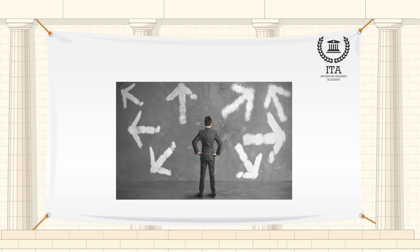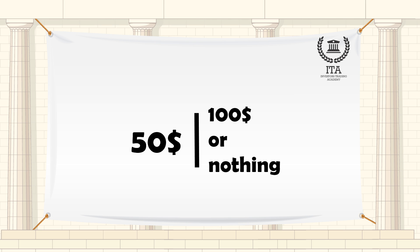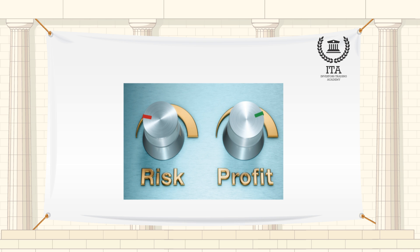A person is given the choice between two scenarios, one with a guaranteed payoff and one without. In the guaranteed scenario, the person receives $50. In the uncertain scenario, a coin is flipped to decide whether the person receives $100 or nothing. The expected payoff for both scenarios is $50, meaning that an individual who was insensitive to risk would not really care whether they took the guaranteed payment or the gamble. However, individuals may have different risk attitudes.